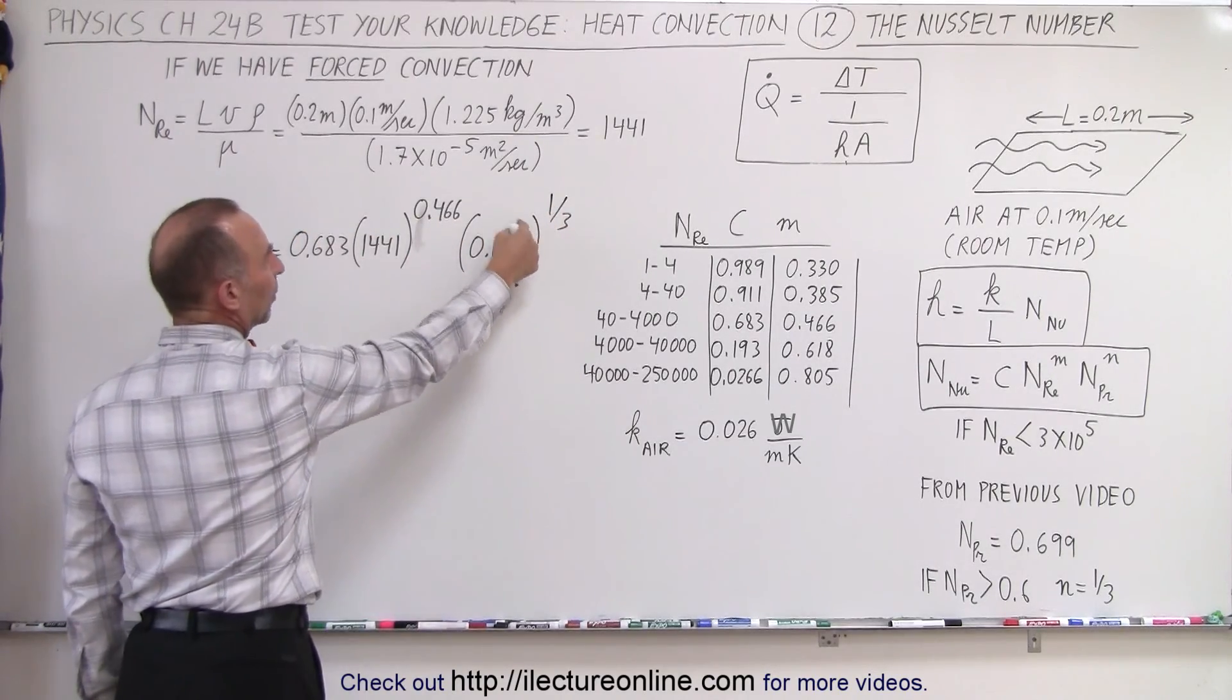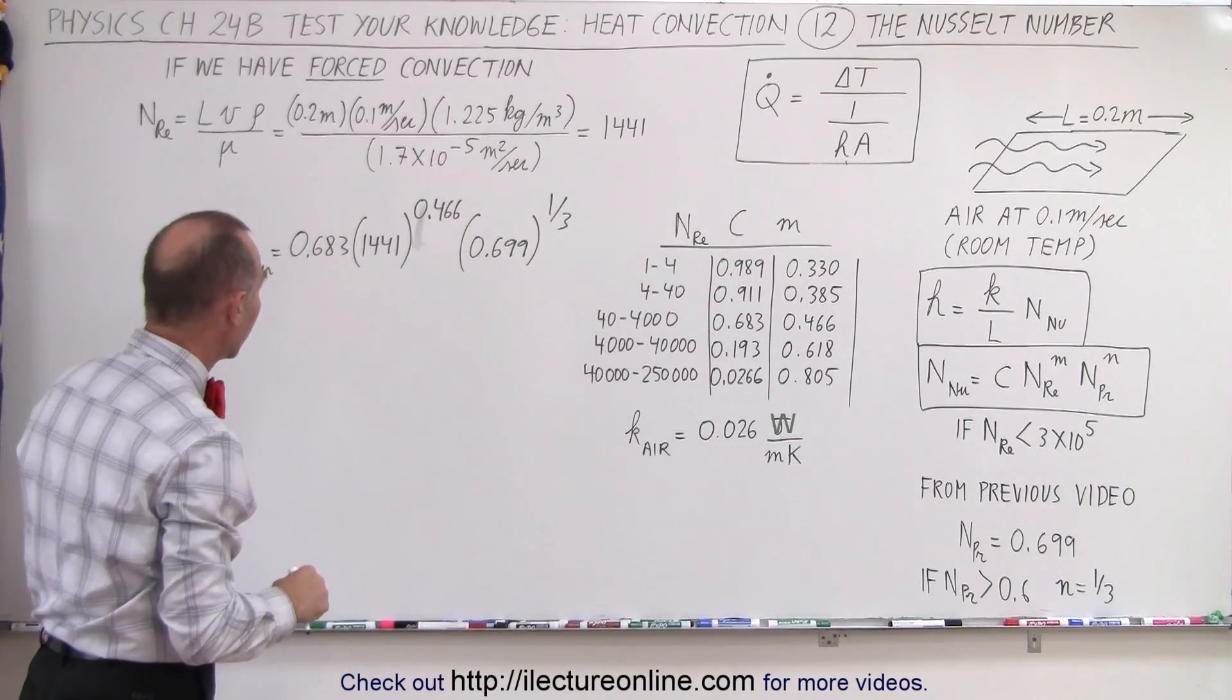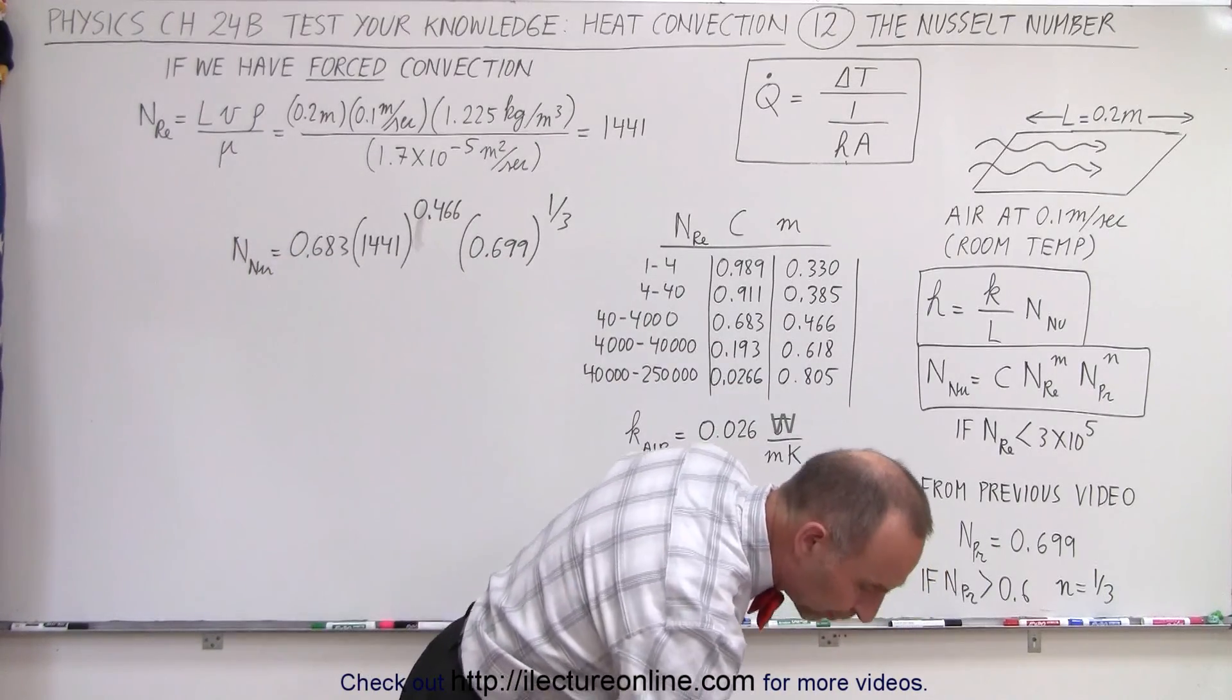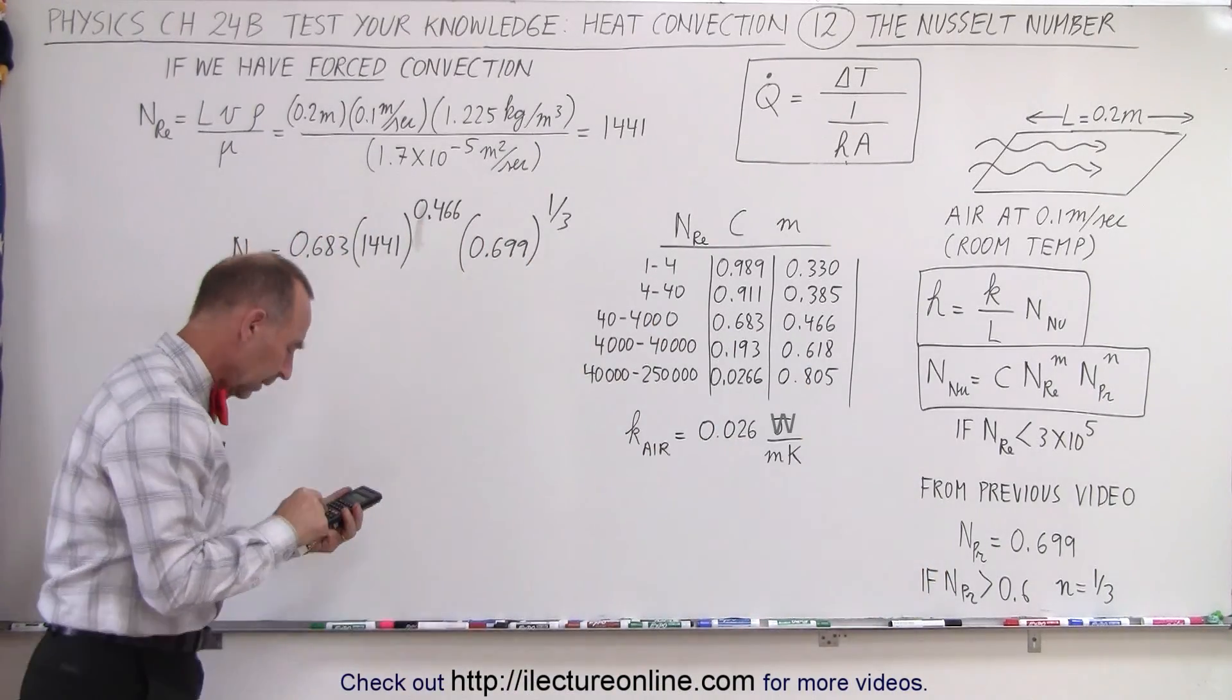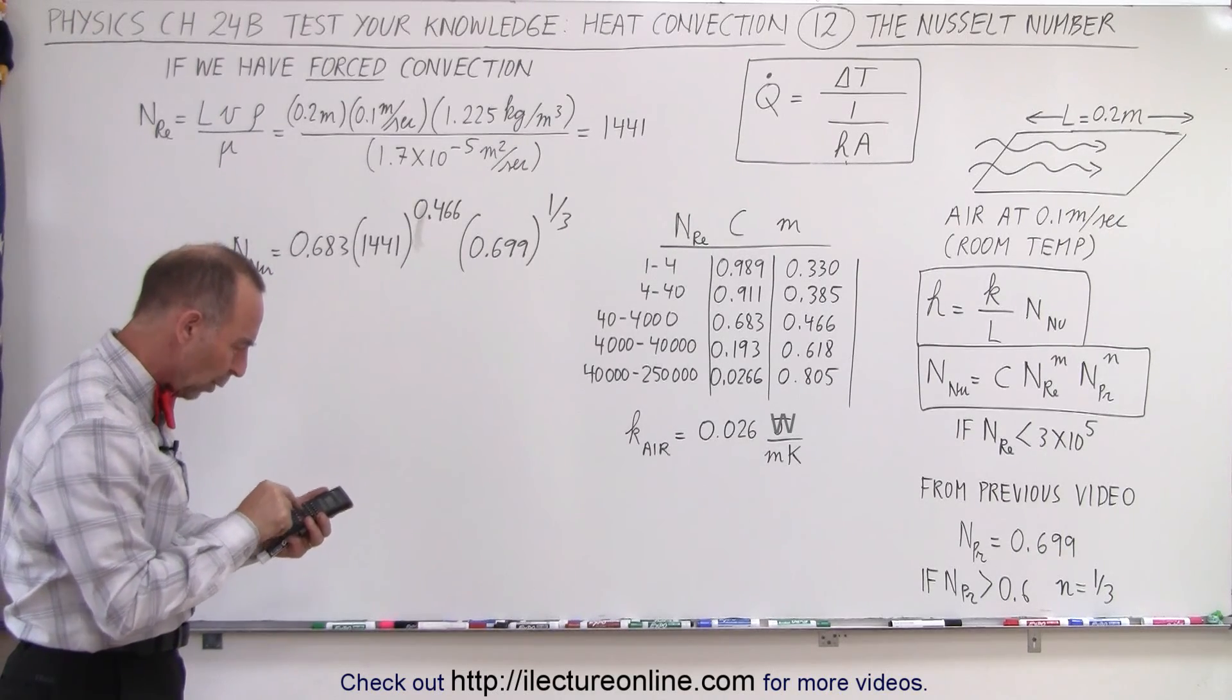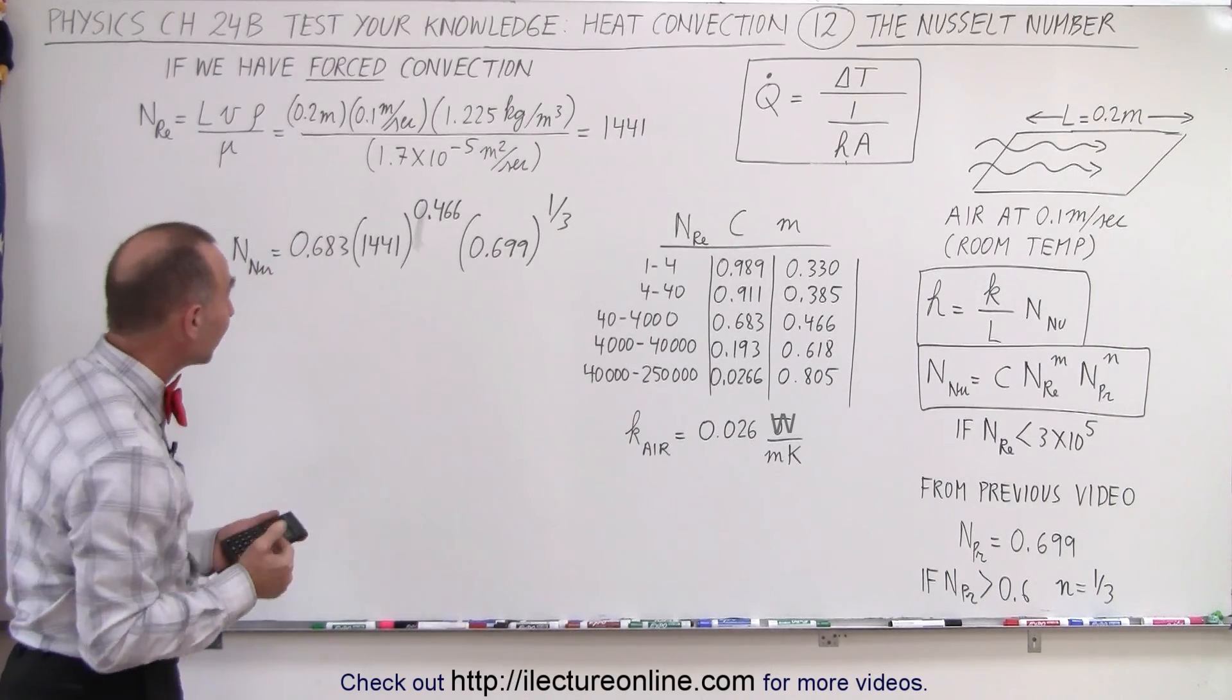Notice because this raised to the one-third power that the Prandtl number will get a value of pretty close to 1. All right, let's go ahead and now with the calculator, see what that's equal to. So let's take 0.699 raised to the one-third power. That's 0.887.